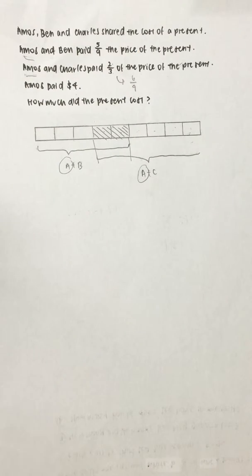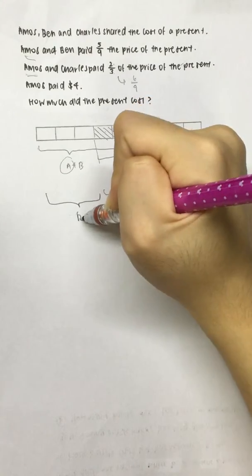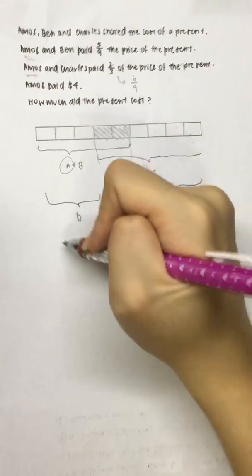The 2 units overlap would be what Amos had paid. Hence, this would be Charles's portion, Amos's portion, Ben's portion.